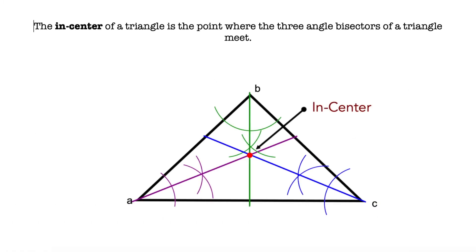What is the incenter? The incenter of a triangle is the point where the three angle bisectors meet. Remember that an angle bisector is the line that splits an angle into two equal parts.